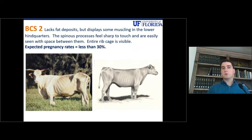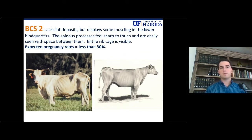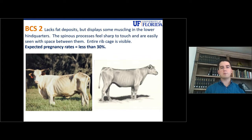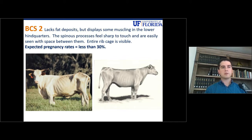Body condition score 2: this is a cow where you will not see fat being deposited on the animal. You will see the entire ribcage. You will be able to see the backbone and you can actually identify every individual process of the spine. And you will not see muscle or fat being deposited in the hindquarters. If a cow calves on a body condition score of 2, the expected pregnancy rates won't be more than 30%.